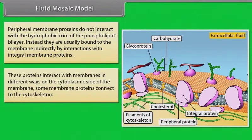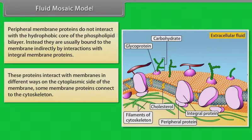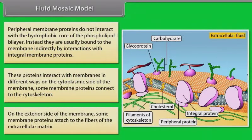These proteins interact with membranes in different ways. On the cytoplasmic side of the membrane, some membrane proteins connect to the cytoskeleton. On the exterior side of the membrane, some membrane proteins attach to the fibers of the extracellular matrix.